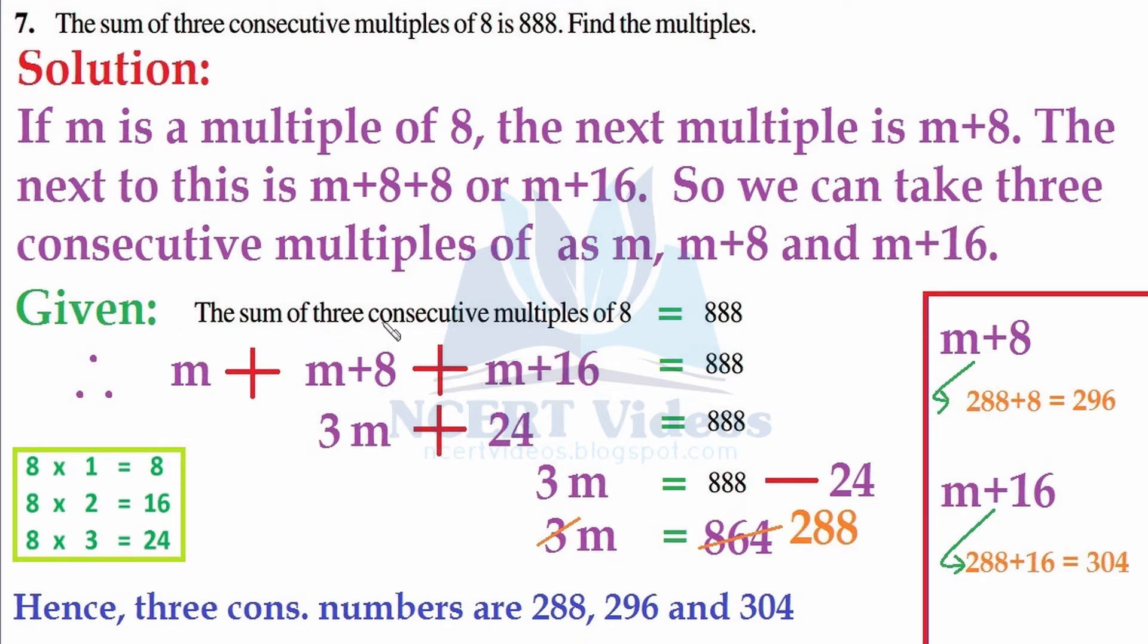It's good practice to write given information: the sum of three consecutive multiples of 8 equals 888. This is the only information we get from the statement. Having known this idea, we will simply plug the values into this statement. In mathematical notation: the first assumption we made for the multiple is small m, and we are going to add the next consecutive multiple, so it would be m plus 8. The third multiple of 8 would be m plus 16, and this equals 888.